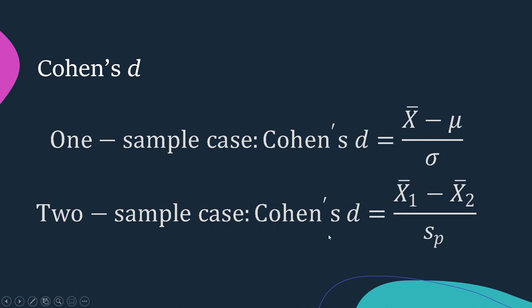Now in the two sample case, you would take the difference between the two means you've obtained. And then you would divide by the pooled standard deviation. And that would be the way that you would get to Cohen's D for a two sample comparison case.